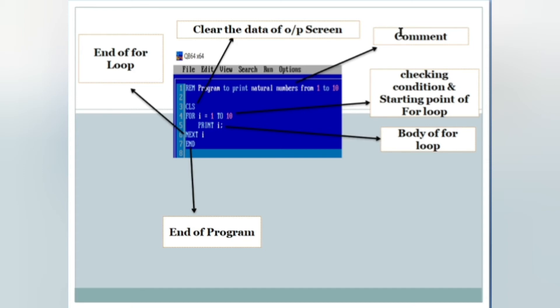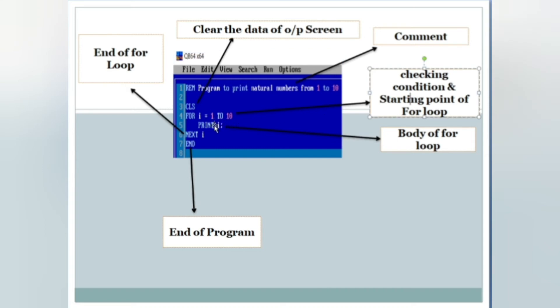REM is used to write comments in the program, like the program name or any message. CLS clears the data of the output screen. 'FOR i = 1 TO 10' is the start of the loop and it checks the condition there. 'PRINT i' is the body of the FOR loop — whatever is written between FOR and NEXT i is the body. NEXT i means end of the loop and equals i plus one. END means end of the program.